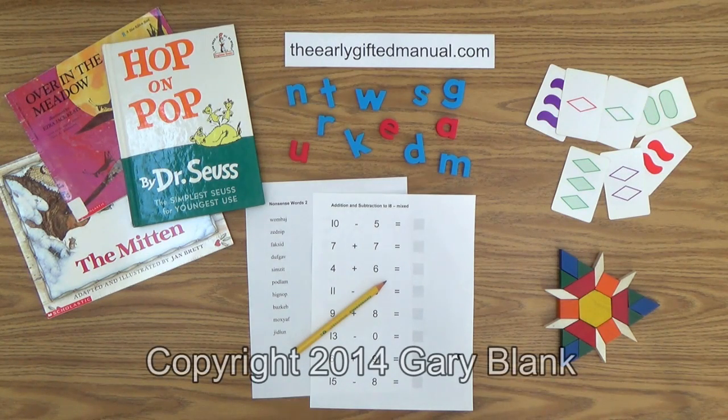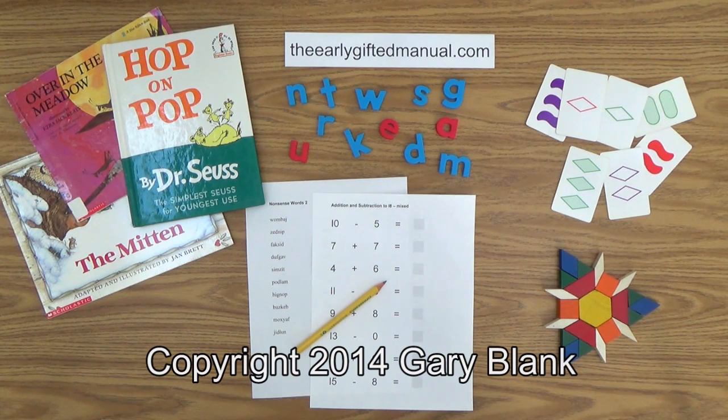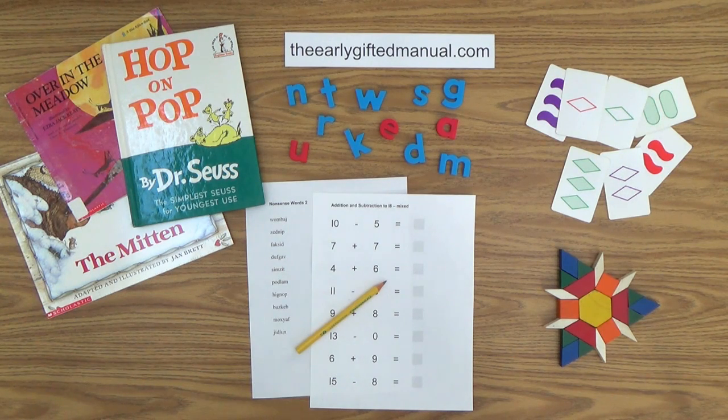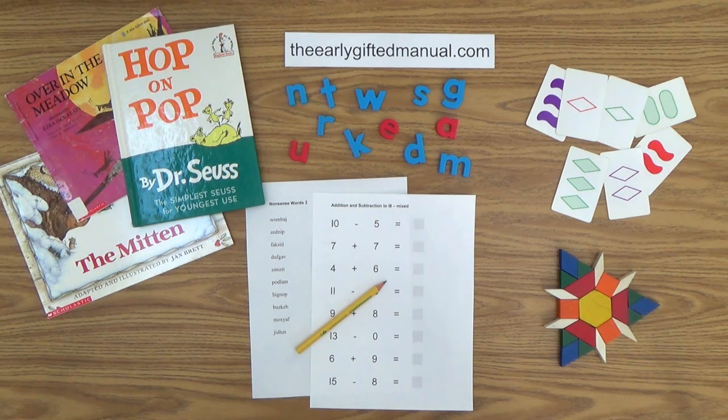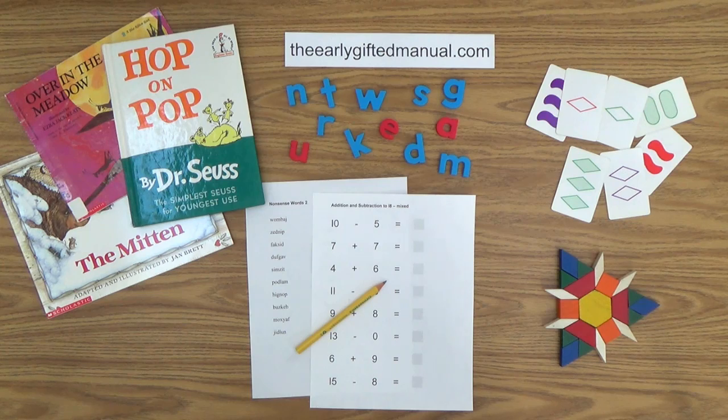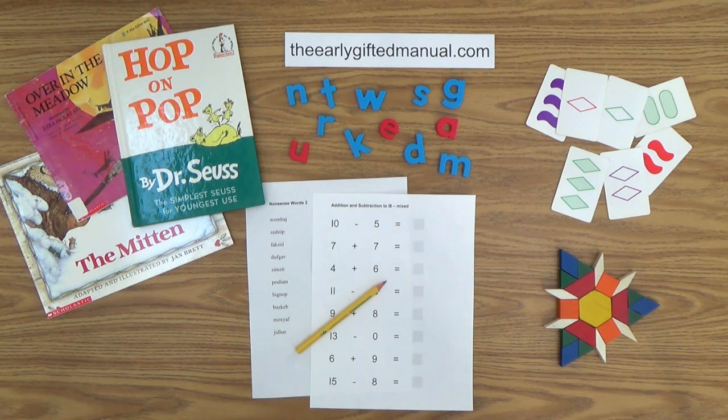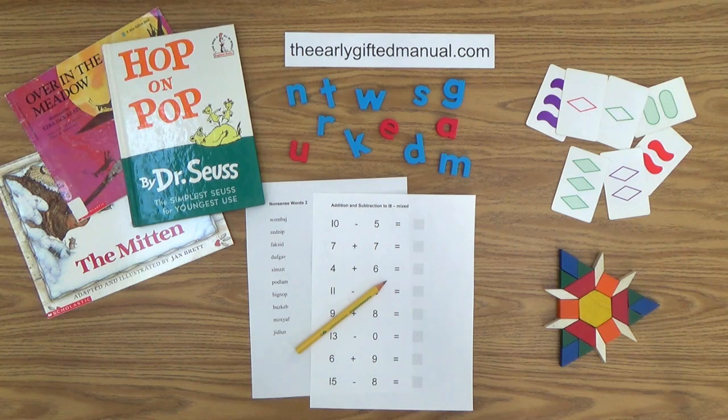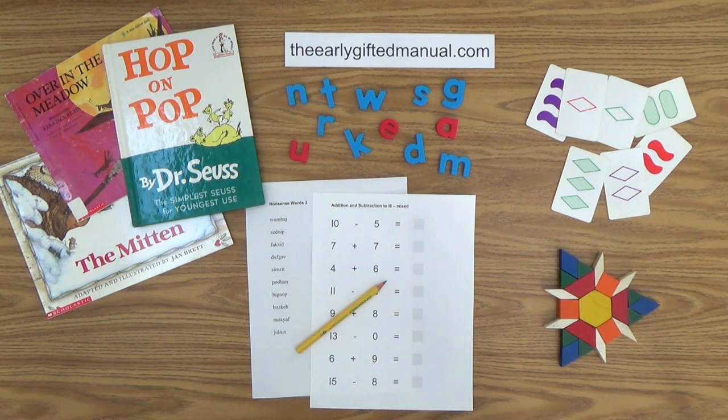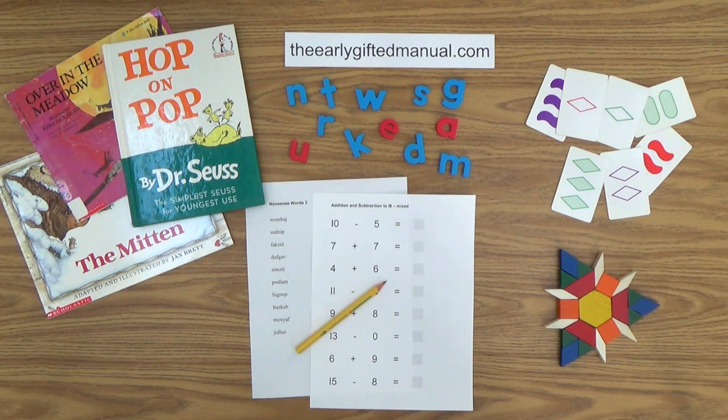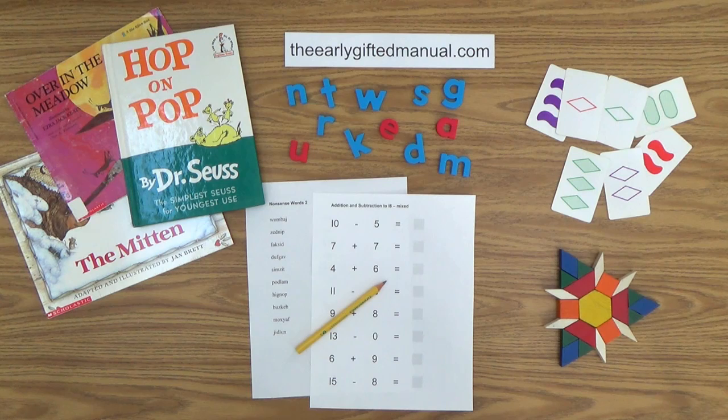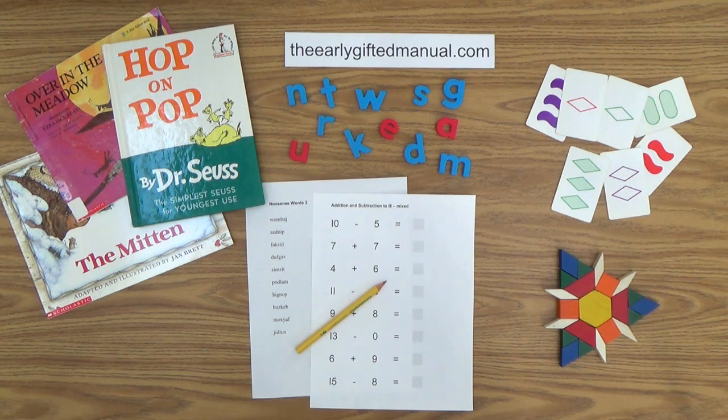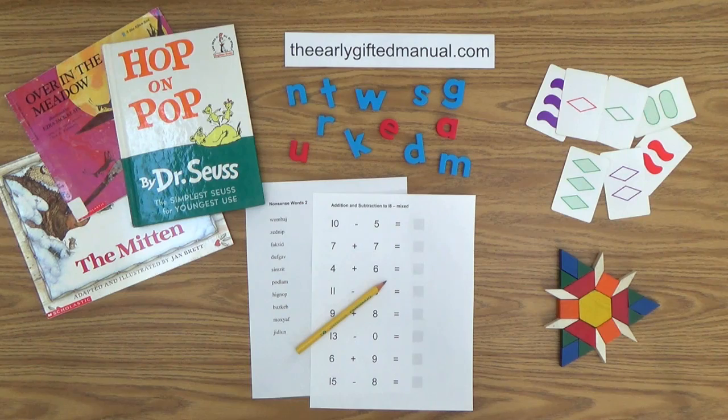Welcome to another parent-teacher video lesson from theearlygiftedmanual.com, a free website for homeschooled children three to seven years old and their parents that promotes and develops giftedness at an early age. I am Gary Blank, the creator of that site and your host and facilitator for this video and all of the videos in my educational program. As the video lessons are designed to work in conjunction with the program on my website, I ask you to, at some point, click on the URL link in the description box below. This action will take you to theearlygiftedmanual.com, and by doing that you will be able to put this lesson and all of the video lessons here on my channel in the proper context of the total program that I am presenting to you and your child.